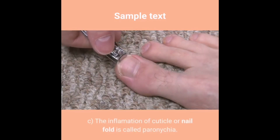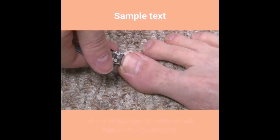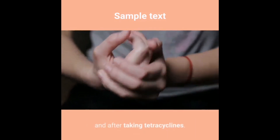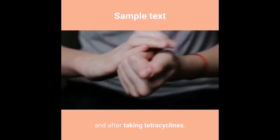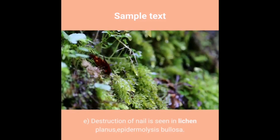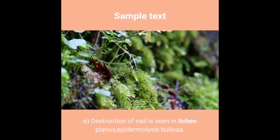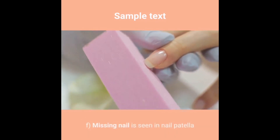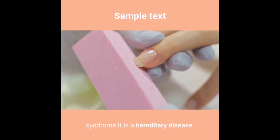C) The inflammation of the cuticle or nail fold is called paronychia. D) Onycholysis is the separation of the nail bed, seen in psoriasis, infection and after taking tetracyclines. E) Destruction of the nail is seen in lichen planus and epidermolysis bullosa. F) Missing nail is seen in nail-patella syndrome, which is a hereditary disease.